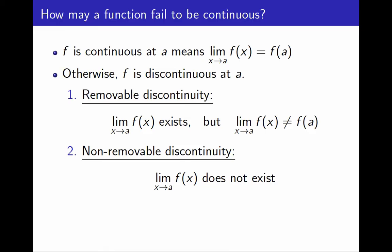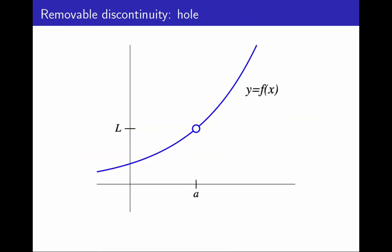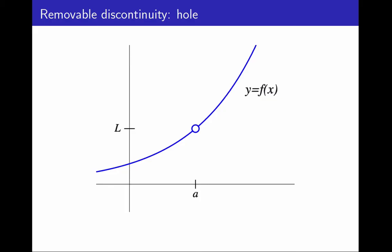I will explain why this classification is useful, and the reason for the name. Here is an example of a removable discontinuity. The limit as x approaches a exists, but is not equal to f(a). In this case, the graph has a hole. It does not matter whether the function is undefined at a, or it is defined but with a different value. In both cases, the graph has a hole, and both cases count as a removable discontinuity.